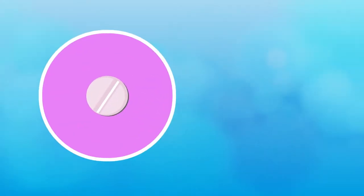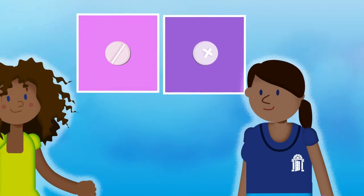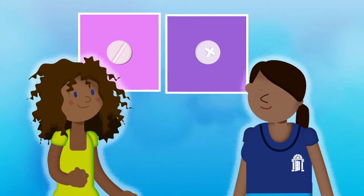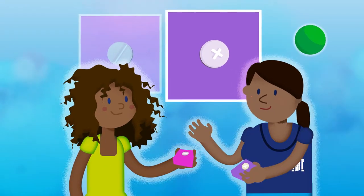There are two types of pills available: the combined pill and the mini pill. Each have different kinds of hormones suiting different people. If one doesn't suit you, you can always talk to your provider about a different option.